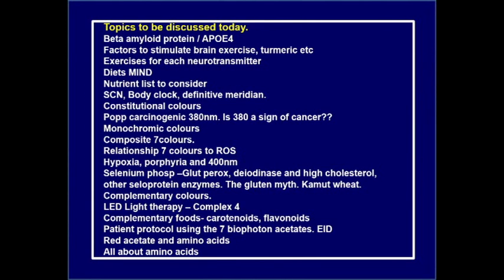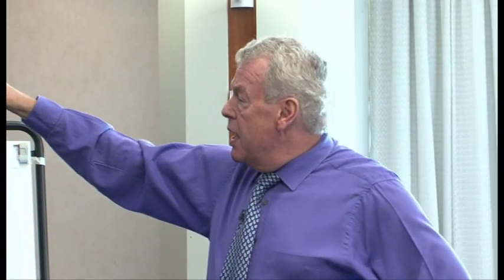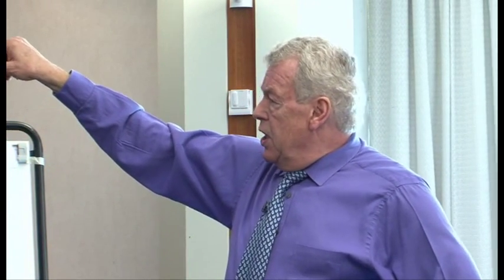We're going to look at exercises for each neurotransmitter — ways of stimulating the neurotransmitters through physical exercise and how best to do that. We'll look at the introduction to diets in helping brain function and reducing the incidence of dementia, a nutrient list to consider, the suprachiasmatic nucleus, body clock, and the definitive meridian, which are the major points of how we start looking at a patient.